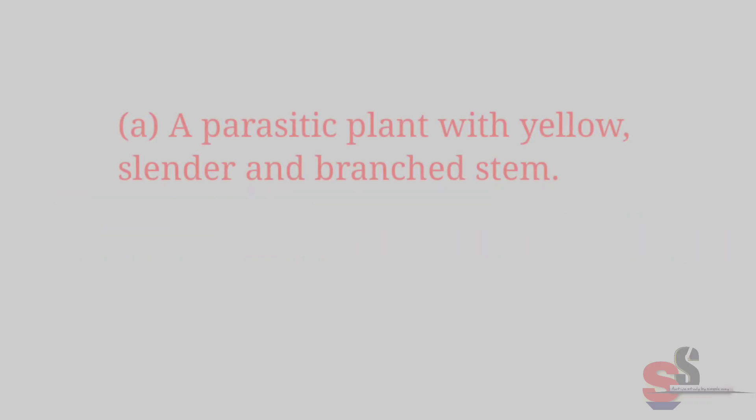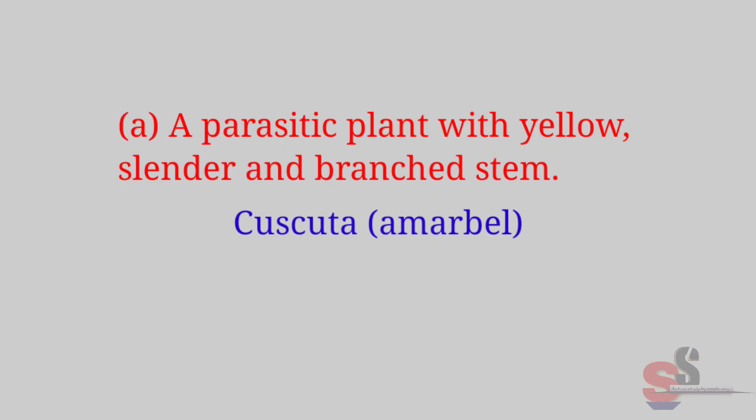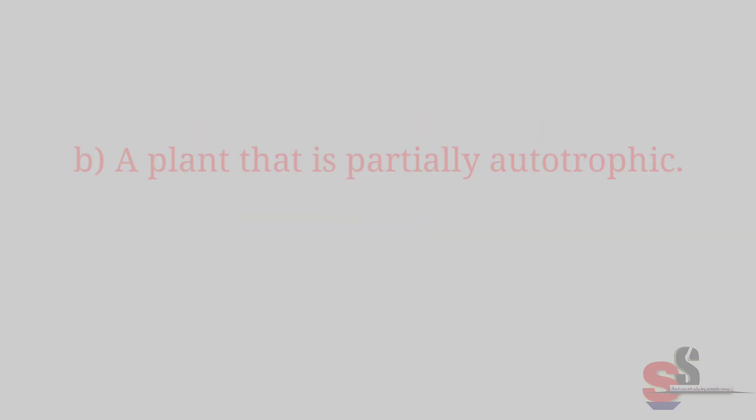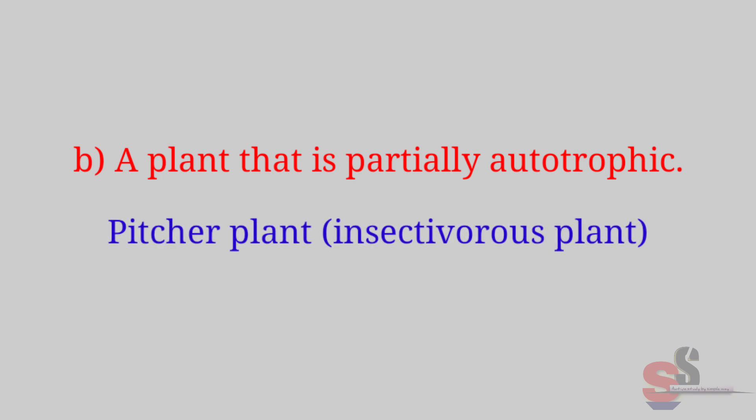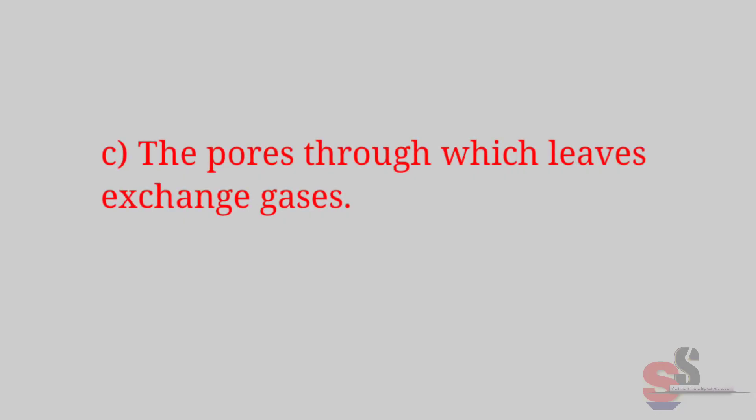Question 7: Name the following. (a) A parasitic plant with yellow, slender, and branched stem. Right answer is Cuscuta, that means a model. (b) A plant that is partially autotrophic. Right answer is pitcher plant, that is insectivorous plant. (c) The pores through which leaves exchange gases. Right answer is stomata.